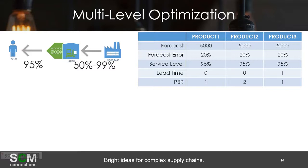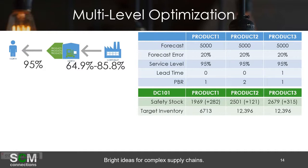What multi-level optimization does, in a short explanation, is optimize and figure out what the service level at the manufacturing site needs to be based on a whole bunch of calculations. In this particular calculation, multi-level optimization comes back with a range of 64.9% to 85.8% for different products, in order to still maintain a 95% service level in front of the customer — but pooling the risk. As a result, the DC actually had safety stock go up slightly, by about 282 units for product 1.